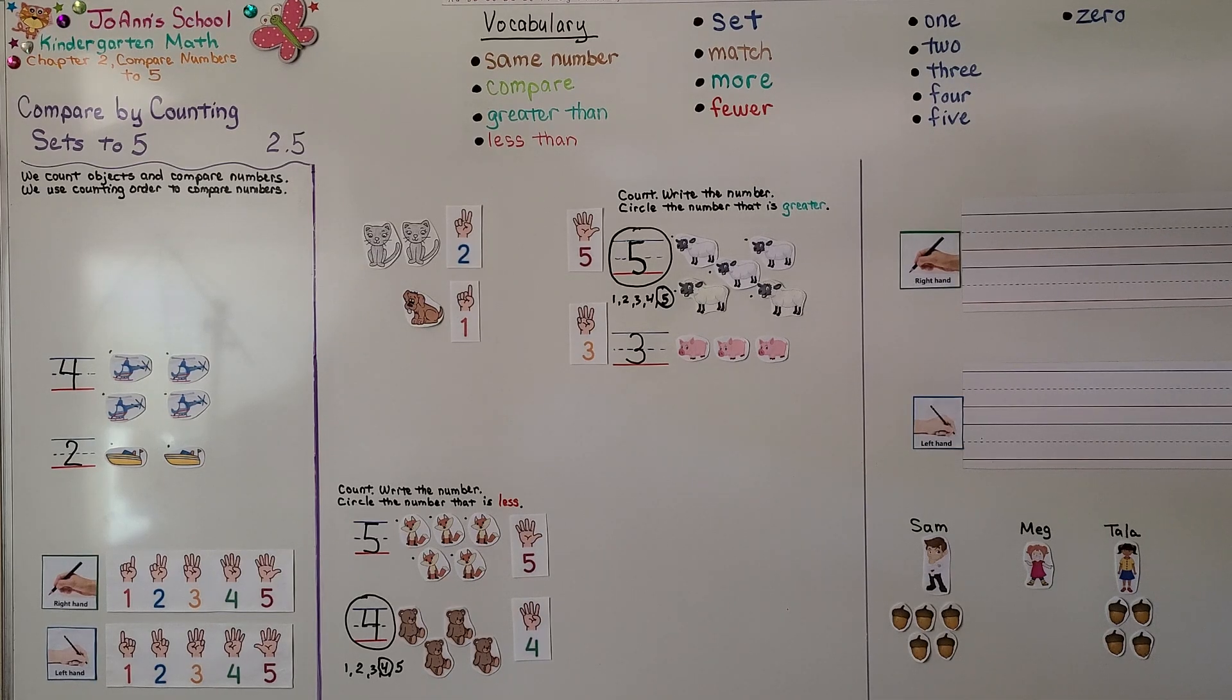So as you're comparing sets in your counting, remember you can mark each object so that you know you've counted it one time. You don't want to accidentally count it again. And we can write numbers in counting order so we can check to see which number comes first or later to know if it's less than or greater than.